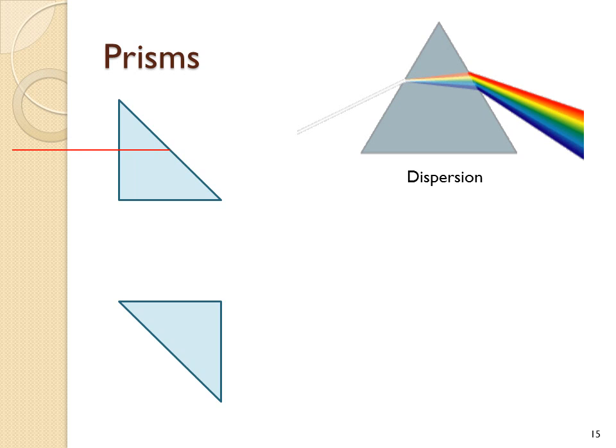When light hits this prism, it arrives at this surface at the normal line and doesn't refract. It hits this surface at an angle of 45 degrees to the normal, which is above the critical angle, and so it reflects. The same process happens again here, and we've used these prisms to create a periscope.